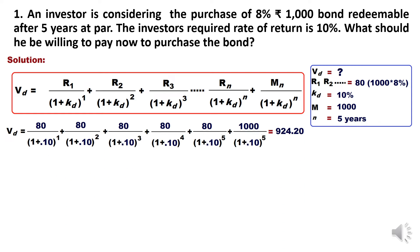Applying the formula: VD = 80/(1+0.1)^1 + ... + 80/(1+0.1)^5 + 1,000/(1+0.1)^5. In the 5th year we receive 80 as interest plus 1,000 as the maturity value, both discounted at (1+0.1)^5. When you simplify this equation, the today's value of the bond will be 924.20. So if you want to purchase this bond, you must purchase it at 924 rupees only. This is how we calculate the value of a bond.